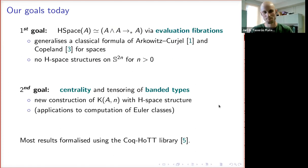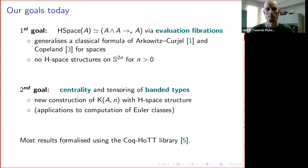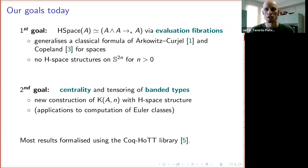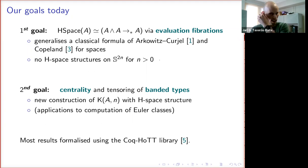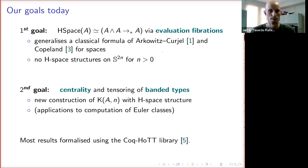Our goals today are twofold. Our first goal is to prove this equivalence which relates H-space — the type of H-space structures on a pointed type A — to pointed maps from A smash A to A. Our proof of this formula goes via evaluation fibrations, which I'll introduce shortly. This formula generalizes a classical formula in spaces, independently discovered by several authors. We'll also see that there are no H-space structures on even spheres in positive dimensions, as is well known classically, but now we can show it in HoTT using this theory of evaluation fibrations.